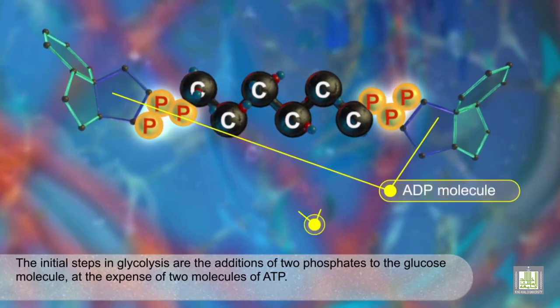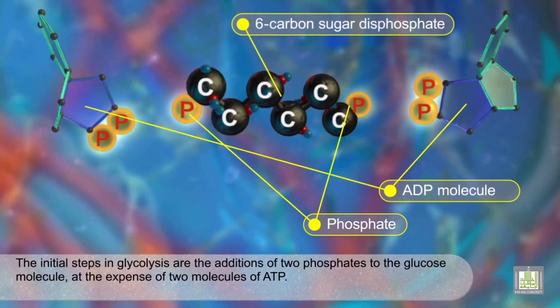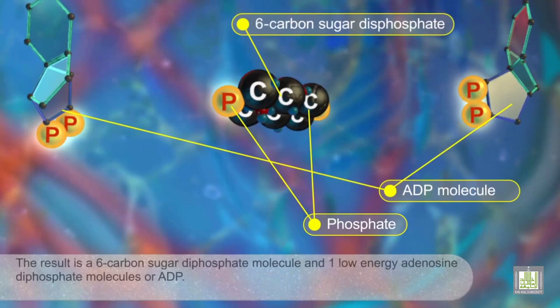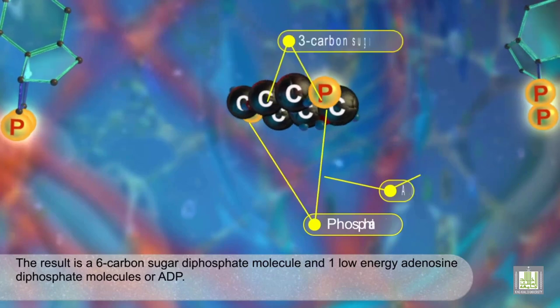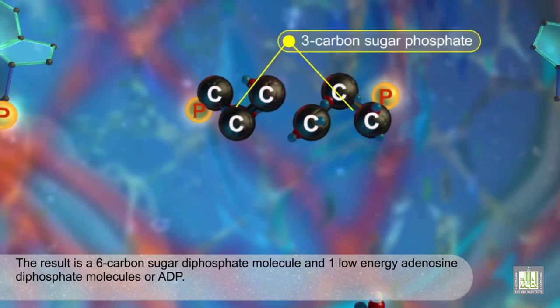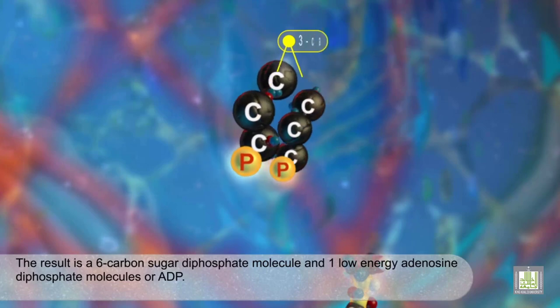The result is a six-carbon sugar diphosphate molecule and two low-energy adenosine diphosphate molecules, or ADP.